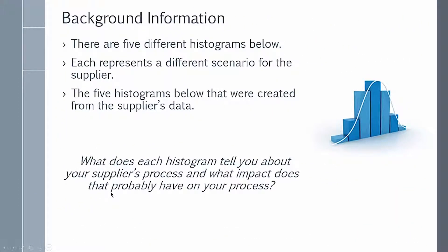So there are five different histograms below. Each represents a different scenario for the supplier, and we created those using the supplier's data. And I want you to take a look at each one and say, what does a histogram tell us about our supplier's process, and what impact does that probably have on your process?